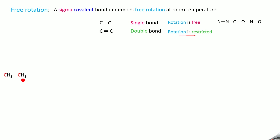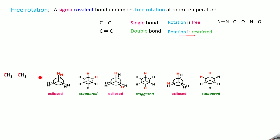For example, take the ethane molecule. In the Newman projection formula, you fix one carbon and rotate the other carbon — you will be getting an infinite number of forms. But all forms we cannot count. Only certain forms whose energy is less or more we can count. You will be getting these forms at particular angles.